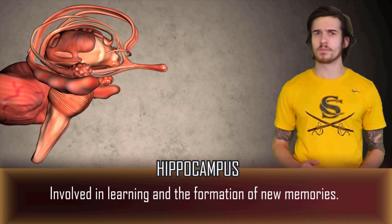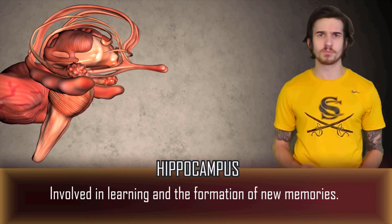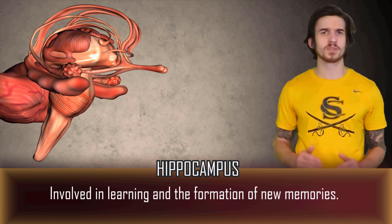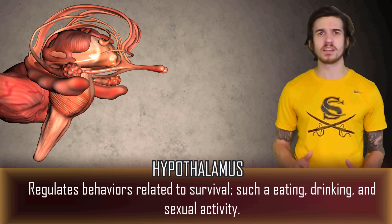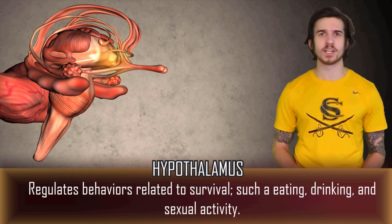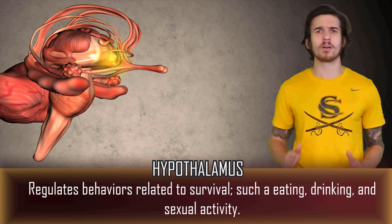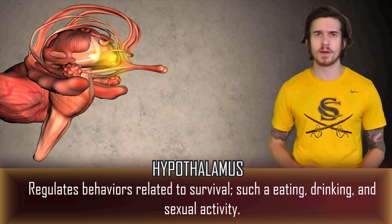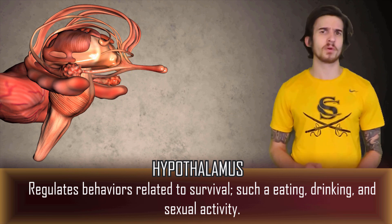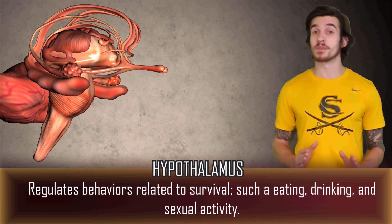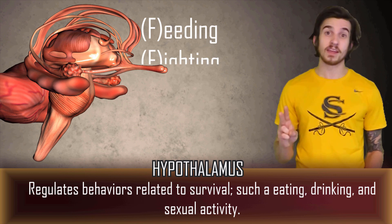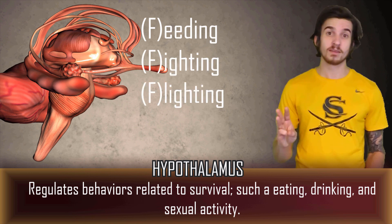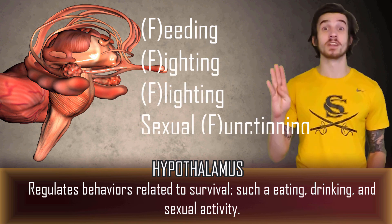The hypothalamus is a peanut-sized brain structure responsible for regulating behaviors related to survival such as eating, drinking, and sexual activity. There are four F's to remember the role of the hypothalamus — here is the PG version: feeding, fighting, flighting, and sexual functioning.